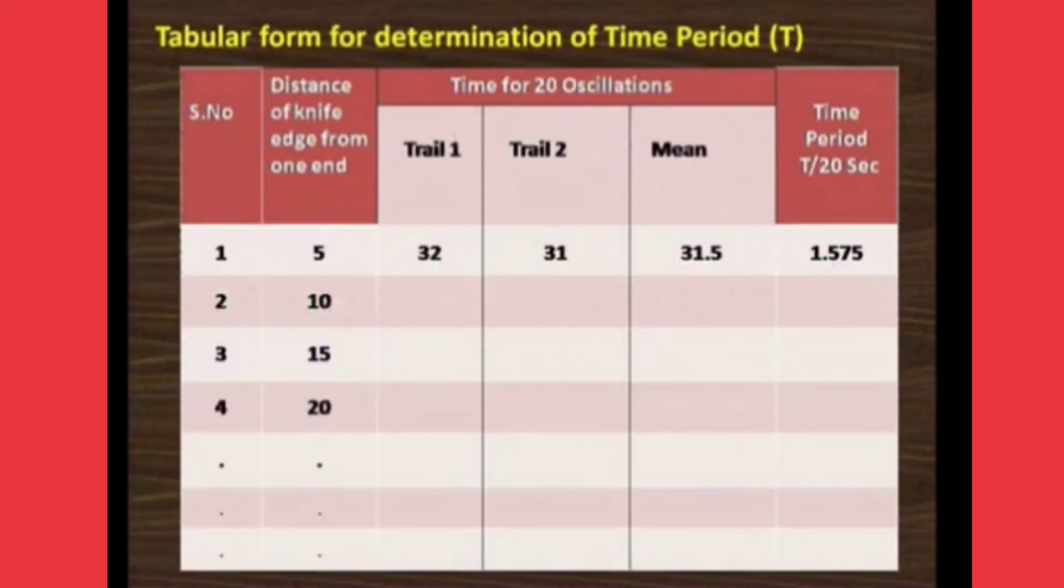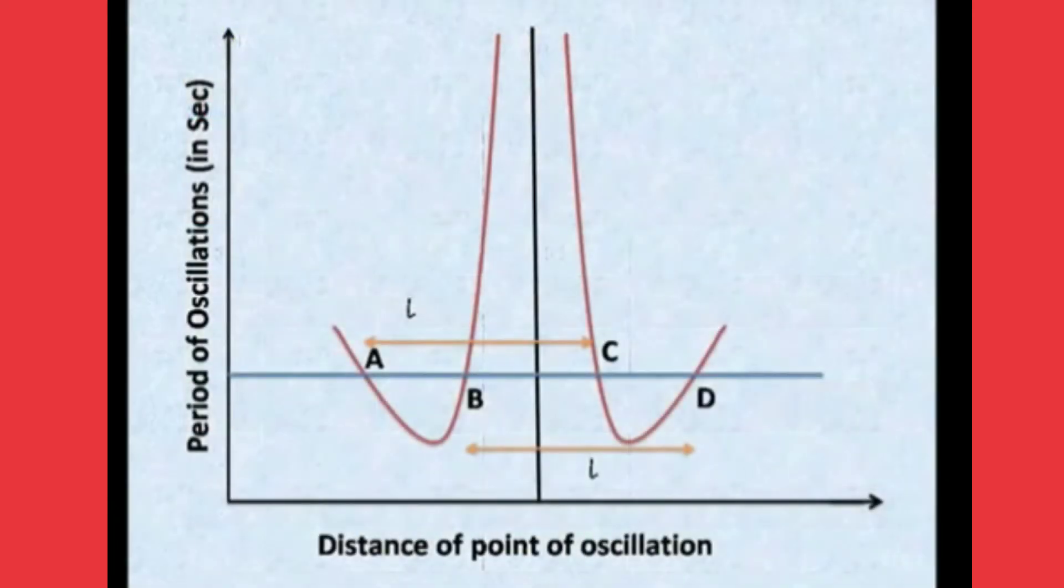Repeat with the same hole as trial 2. Both times you have to do and calculate the mean value. Calculate the time period for one oscillation. Repeat the same experiment for all holes and do the calculations as per the formula.